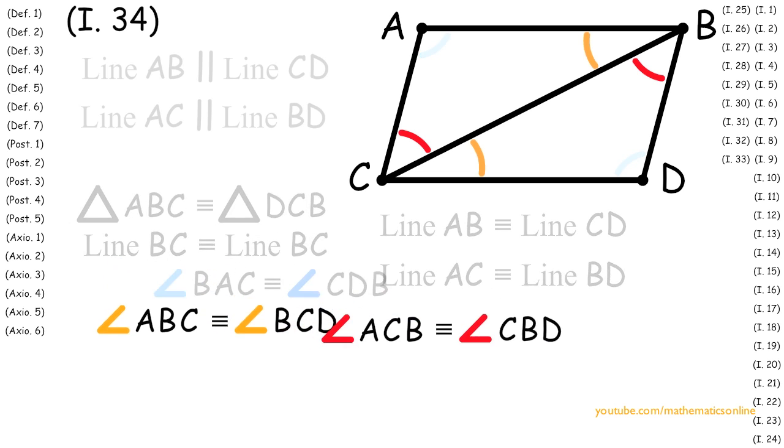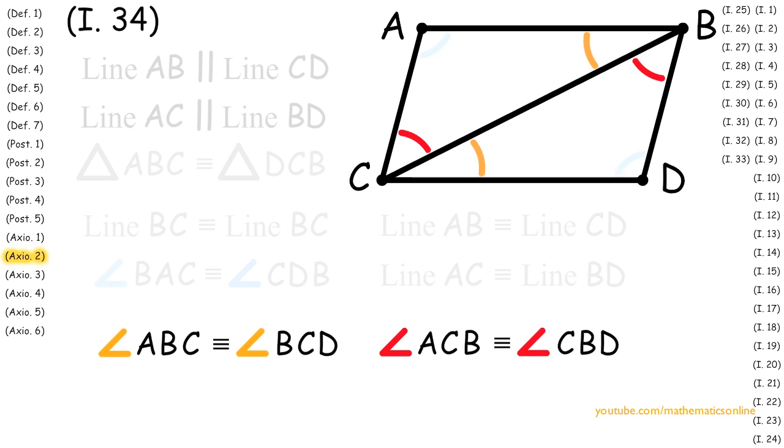Now with the following two facts, we apply Axiom 2 to attain angle ABC plus angle CBD is congruent to angle BCD plus angle ACB. And this turns out to be angle ABD is congruent to angle DCA.